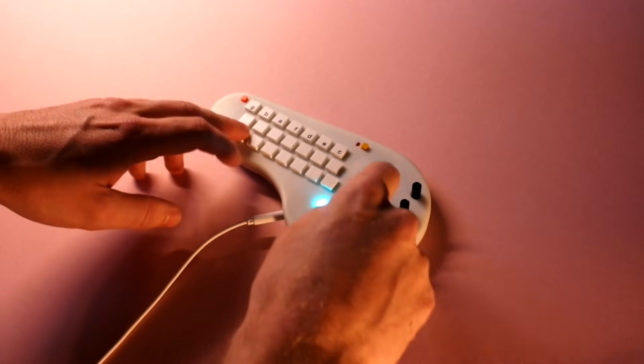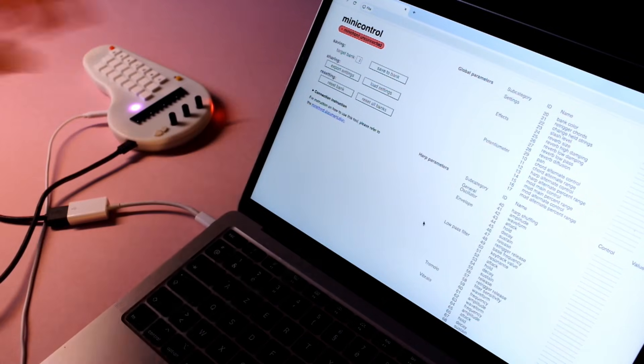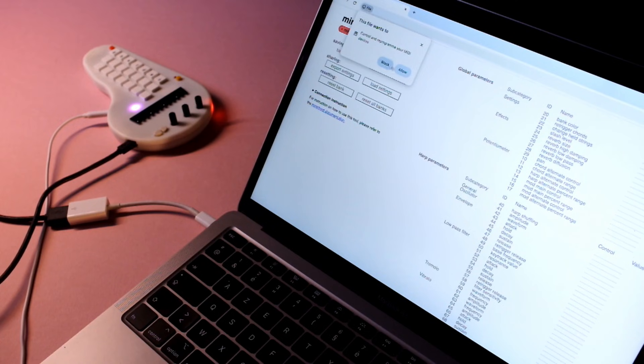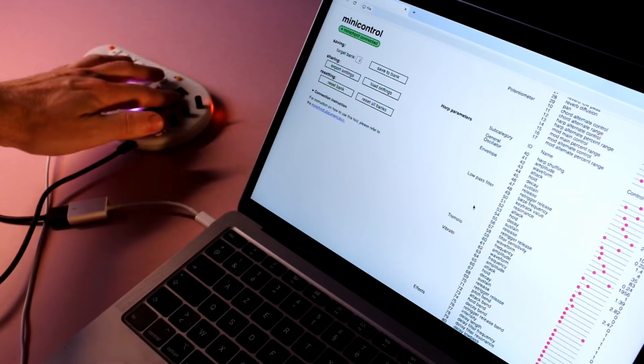Presets can be modified and saved in the internal memory simply by connecting the mini-chord to a USB port and opening a web page. From then on, all parameters of the synthesis can be accessed and modified.